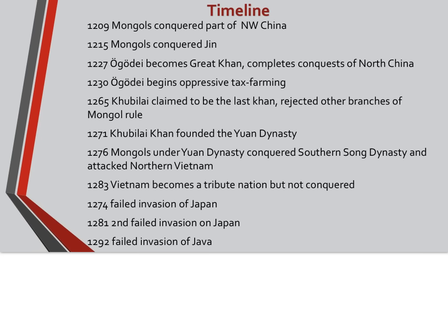These invasions were very expensive for the Mongols and hurt the Yuan dynasty economically. In 1292, there was also a failed invasion of Java. This time they landed on the island, unlike Japan. However, weather as well as diseases forced the Mongols to leave within one year.